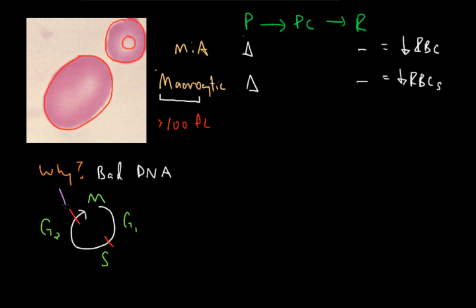For the macrocytic anemias, we're going to be focusing on this one right here, the checkpoint in between G2 and M. Now, at this checkpoint, the cell is making sure that it's ready to divide, and in order to do so, it has to make sure that it has correctly copied DNA in order to proceed from G2 to M.